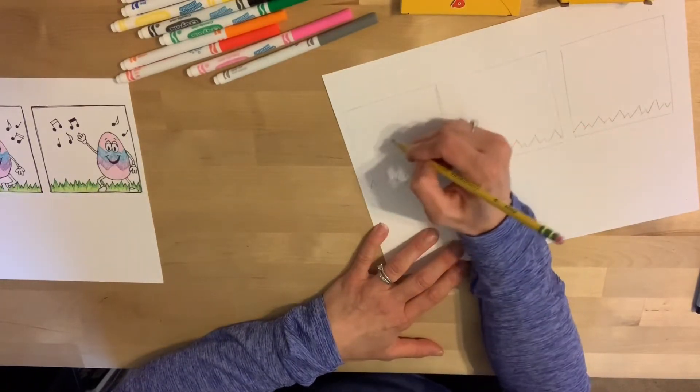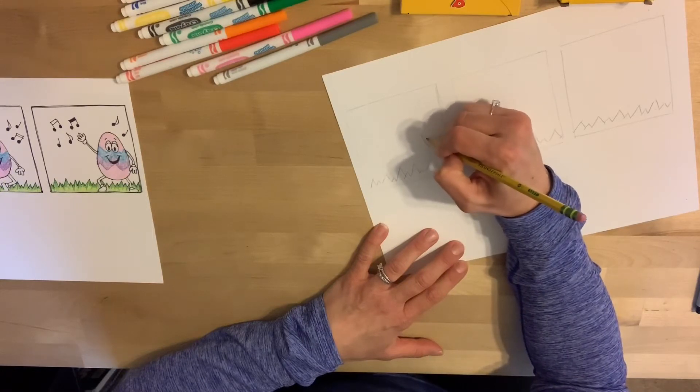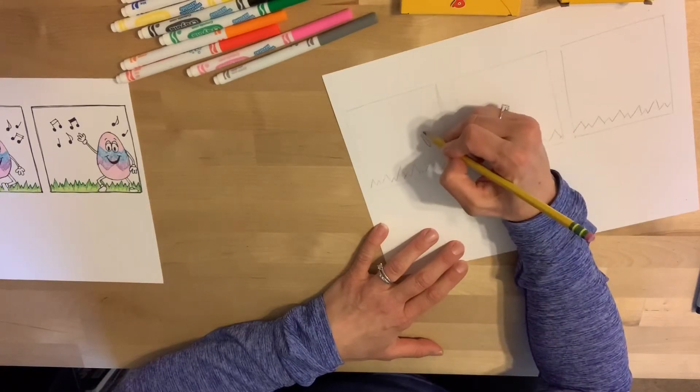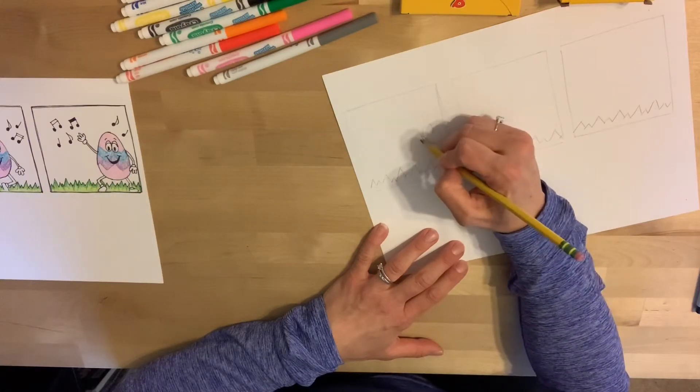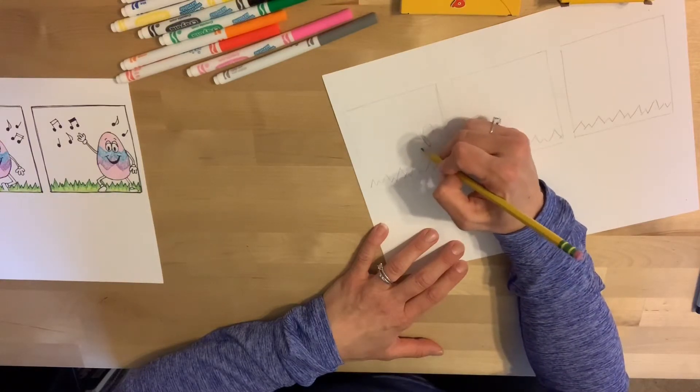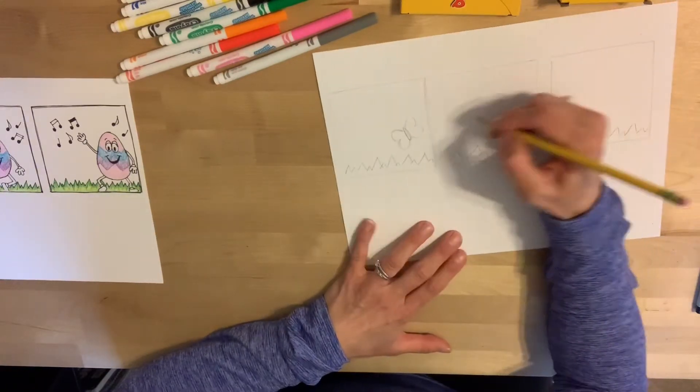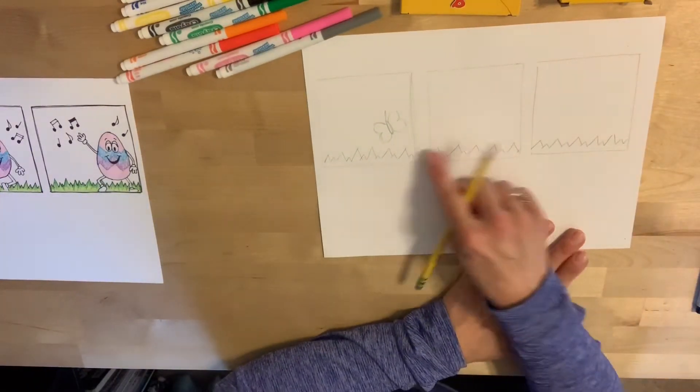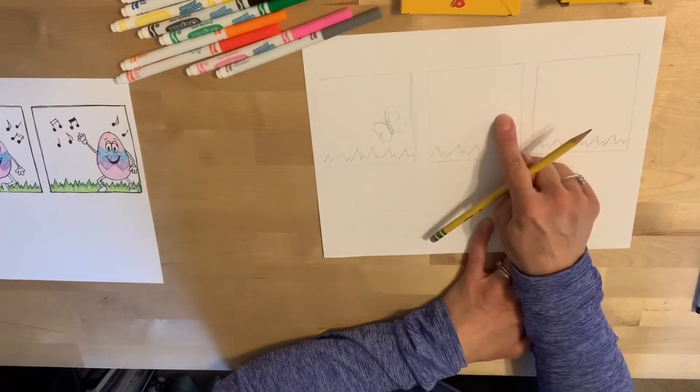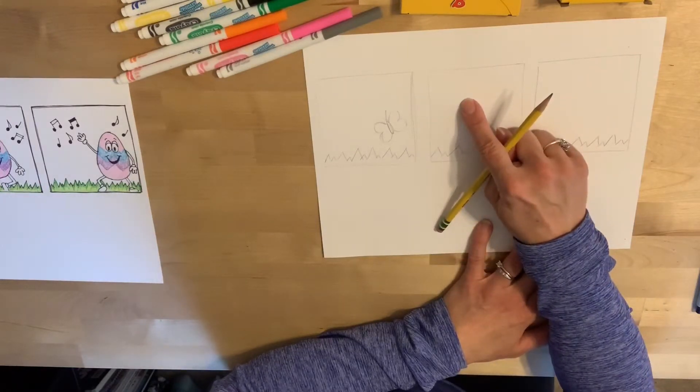Then for a butterfly, I might start with my butterfly over here. And the antenna there. Now I want it to look like the butterfly has moved in this next frame, in this next block. So all that I'm going to do is just move the butterfly up a little bit.